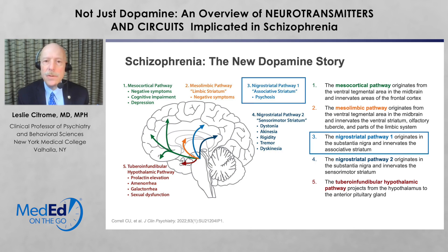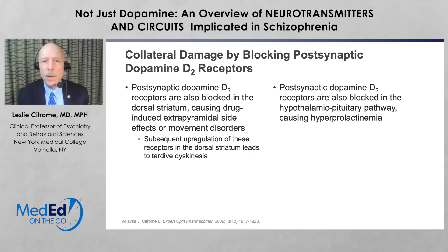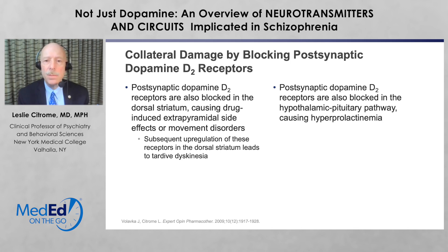And we have the tuberoinfundibular pathway that explains prolactin elevation with some antipsychotics. Let's acknowledge this new nigrostriatal pathway to the associative striatum as a new advance in understanding dopamine. When we block dopamine receptors in parts of the striatum to help with hallucinations and delusions, we also block dopamine D2 receptors elsewhere, causing problems. If we block dopamine D2 receptors in the dorsal striatum, we have collateral damage — induction of movement problems such as drug-induced Parkinsonism or eventually tardive dyskinesia.